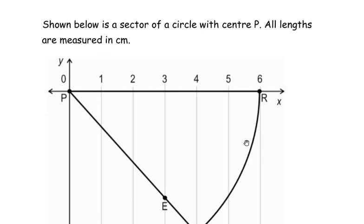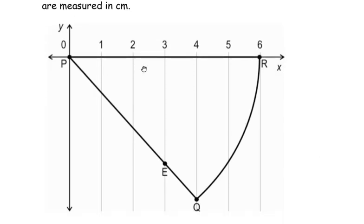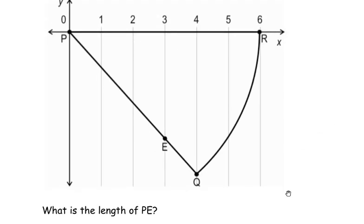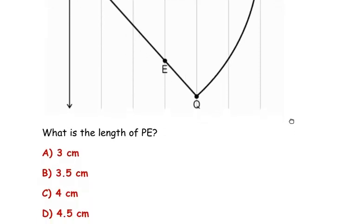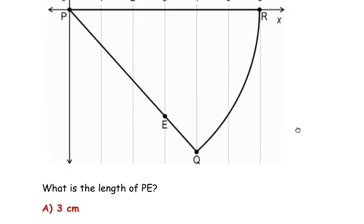Shown below is a sector of a circle with center P. All lengths are measured in centimeters. What is the length of PE? There are four options given, so let us come back to this given diagram.